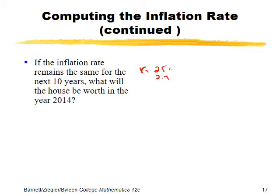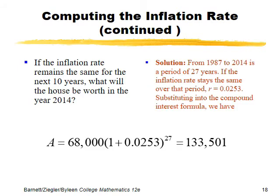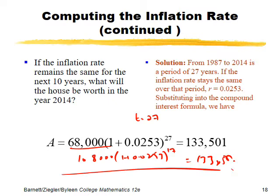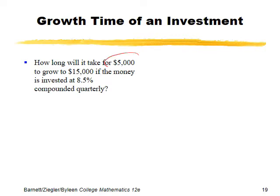If the inflation rate of approximately 2.5% remains the same for the next 10 years, what will the house be worth in 2014? The principal amount would be $104,000 in 2004, and we want its value after 10 more years. We can substitute t as 10 from 2004, or alternatively use t=27 from 1987 with P=68,000 — both approaches give the same result.